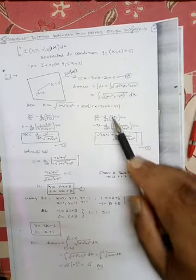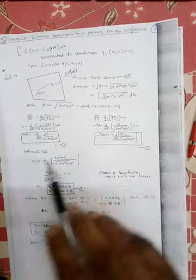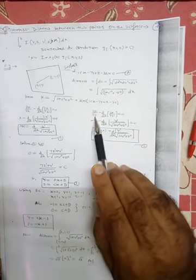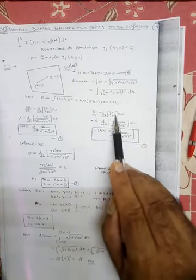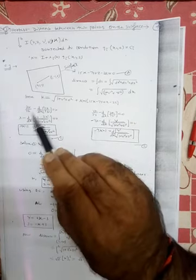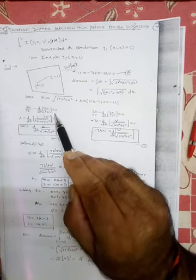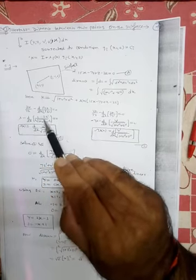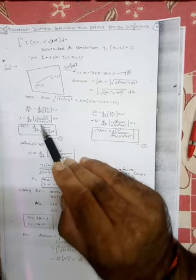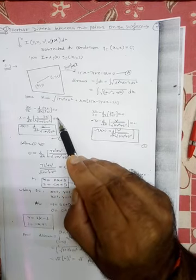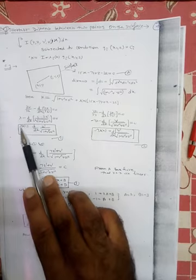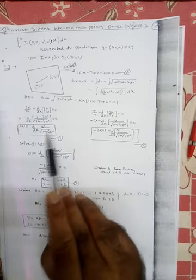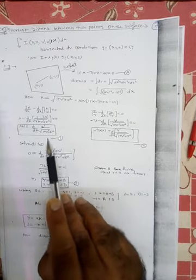So K = √(1 + y'² + z'²) + λ(x)(15x − 7y + z − 22). Applying the Euler equation for z: −λ(x) − d/dx[z'/√(1 + y'² + z'²)] = 0, giving λ(x) = d/dx[z'/√(1 + y'² + z'²)]. This is equation 1.